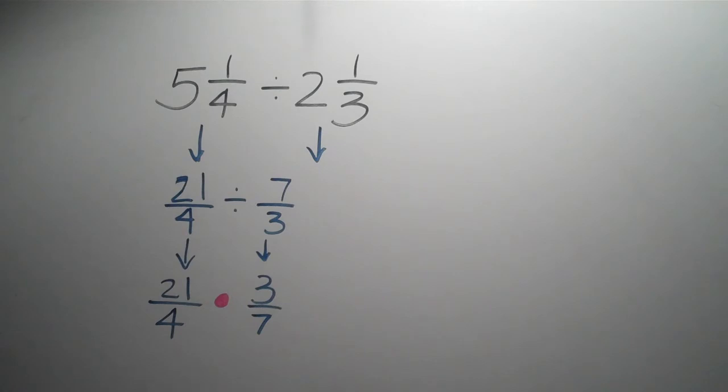The thing that happens next is the cross-reducing. So let's cross-reduce. 7 and 21. Looking at those numbers, we know 21 is a multiple of 7. 7, 14, 21. So 7 fits into 21 for sure. 7 divided by 7 is 1. 21 divided by 7 is 3.